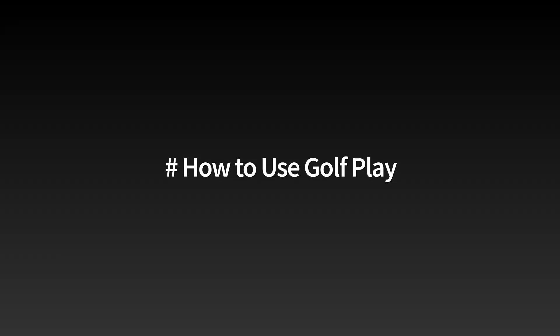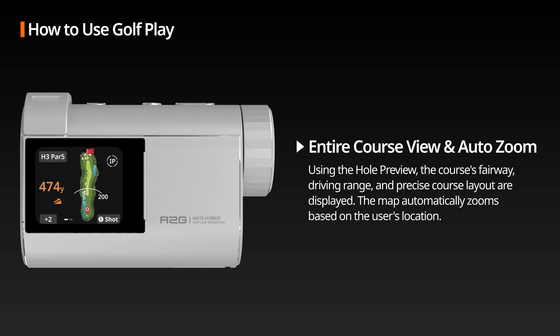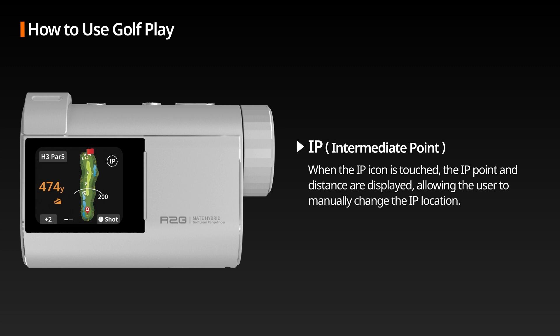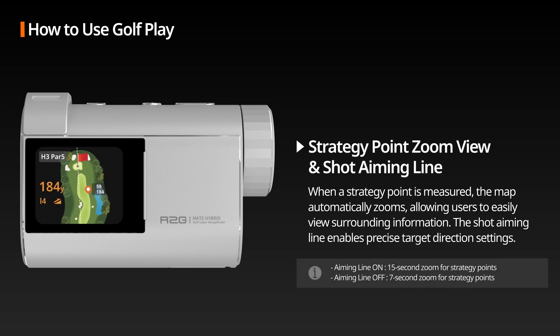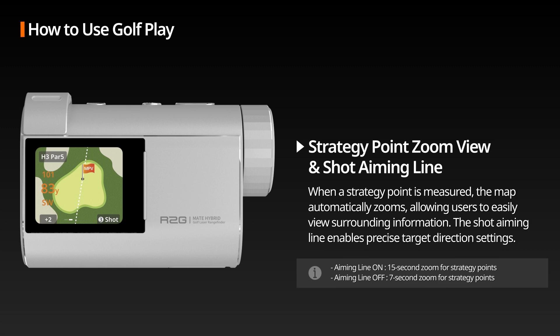How to Use Golf Play: Before starting, please download and transfer the map via the R2G app, then begin your round. Entire Course View and Auto-Zoom: Through the preview of the respective hole, you can check the course fairway, user driving range, and precise course layout. The map automatically displays a zoomed-in view based on the user's location. IP Point: Touching the IP icon displays the IP point and distance, enabling the user to change the IP location directly to assist in strategizing for course play. Strategy Point Zoom View and Shot Aiming Line: When measuring a strategy point, the map automatically zooms in for surrounding details, and using the shot aiming line, users can set an accurate target direction.